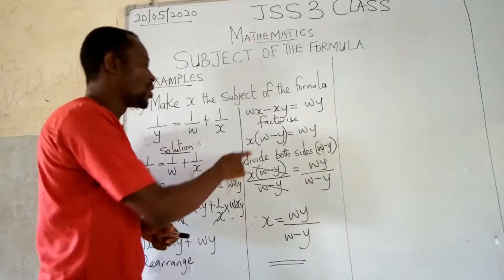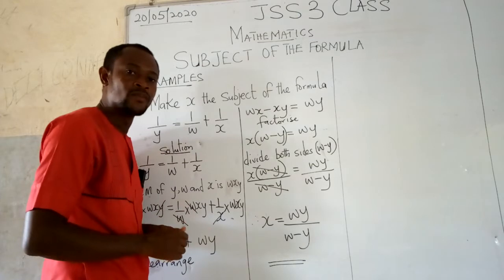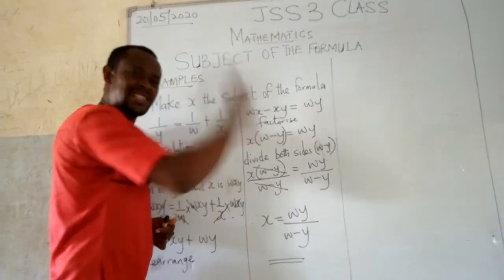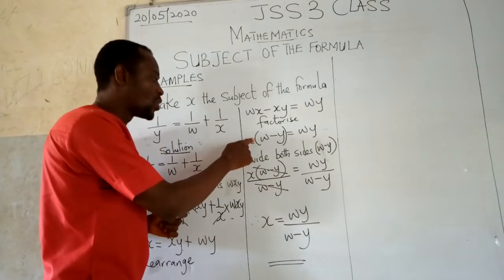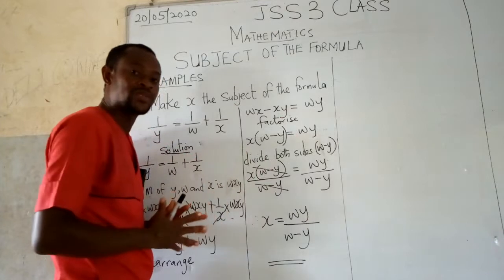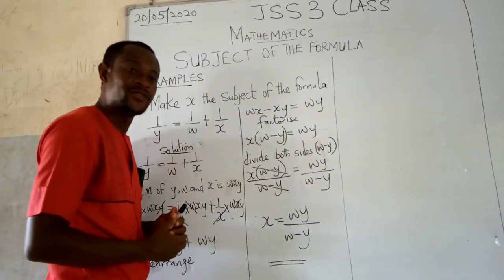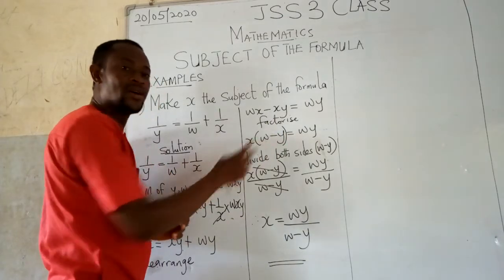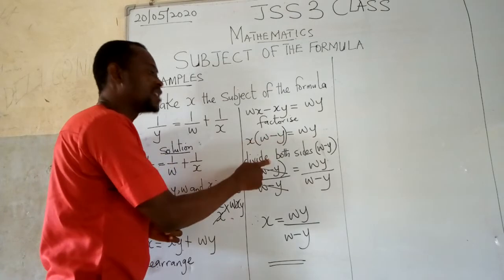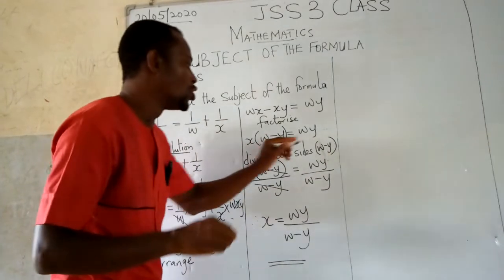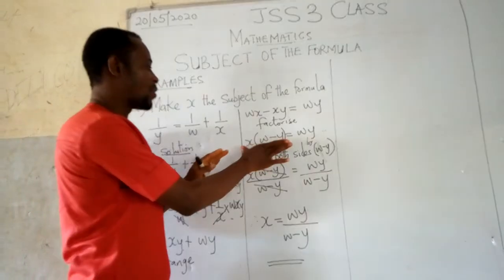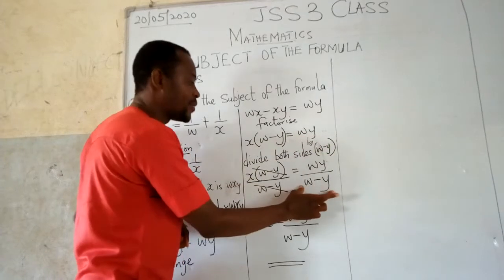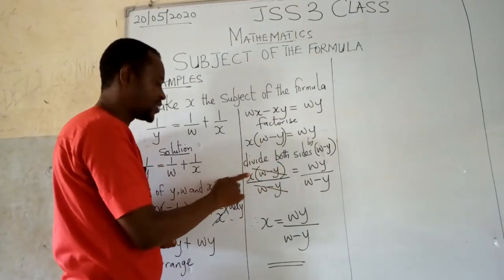So to move forward now, we are trying to ensure that x stands alone. So what do we now do in this regard? We will divide both sides. If you look at it now, we want x to stand alone. And w minus y is disturbing x. So we try to remove it. Where we have addition, the way we can remove it is by subtraction. If we have multiplication, the way we can remove it is by division. And this is x times this bracket. So to remove this w minus y, we divide both sides by w minus y. So this is our initial expression, which is this divided by w minus y. Then this w y divided by w minus y. This we cancel this. What do we have left? X.